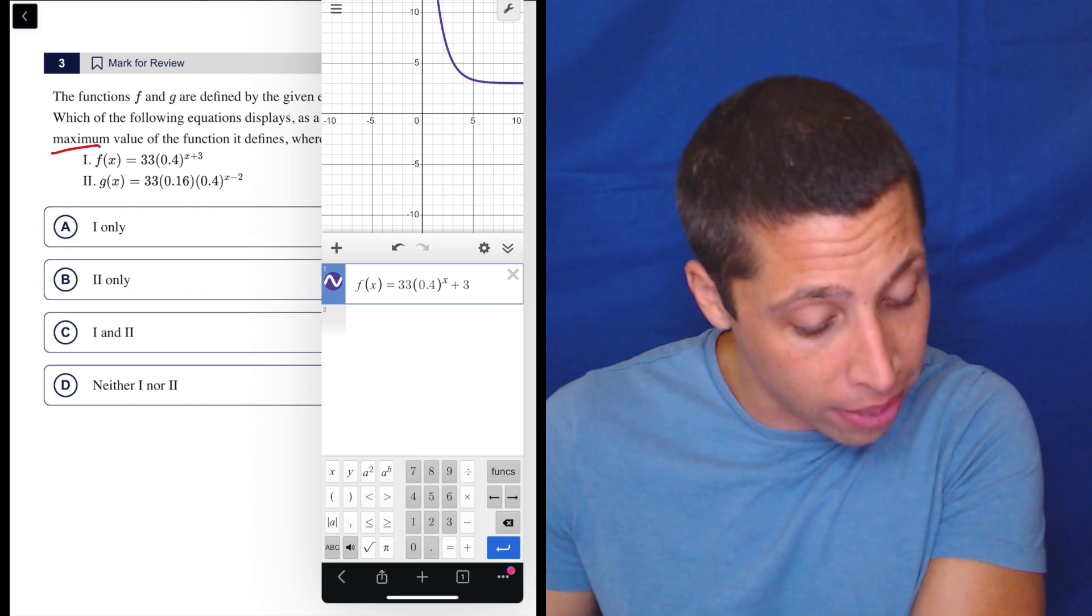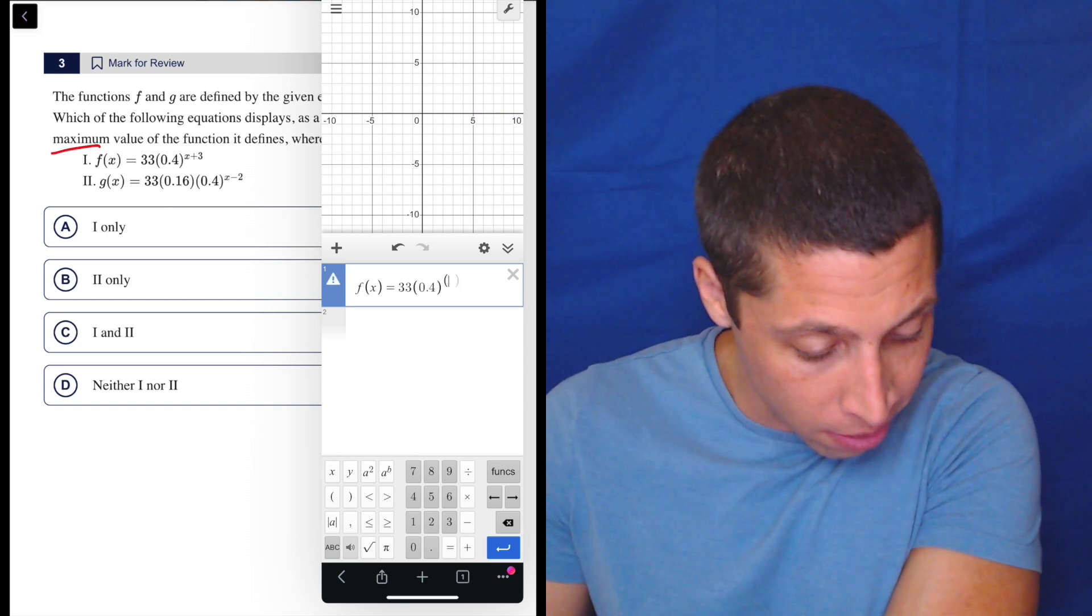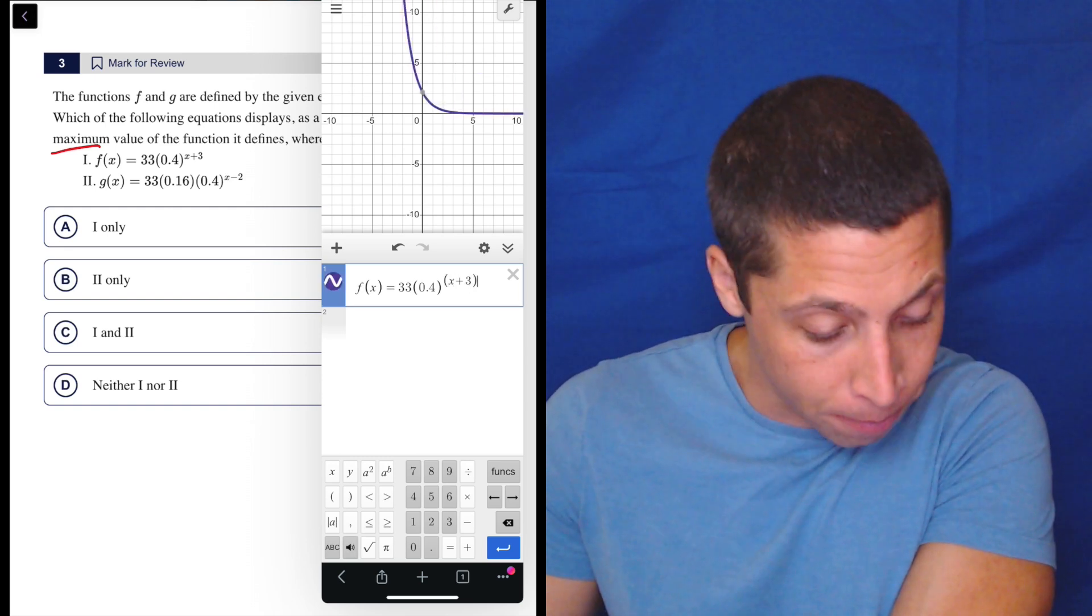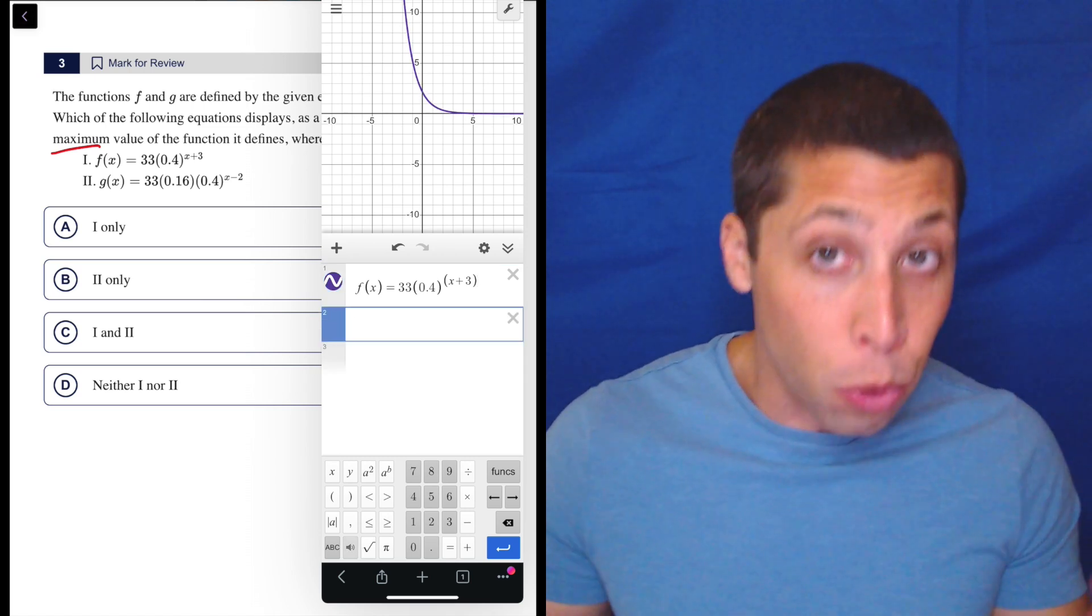it gives me this weird thing where the plus 3 is not where it's supposed to be. It's not in the exponent, it's outside of it. So we've got to fix that. My advice is just do some parentheses. Just do x plus 3 and it keeps it all in the top. So hopefully you knew to do that.